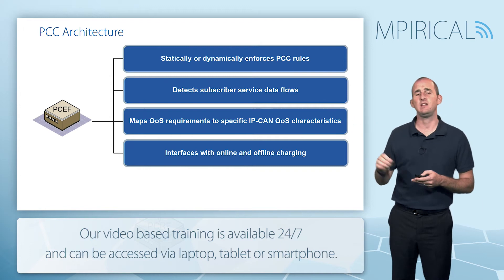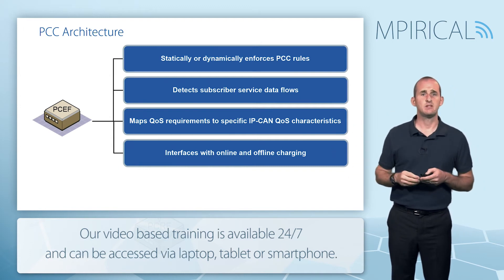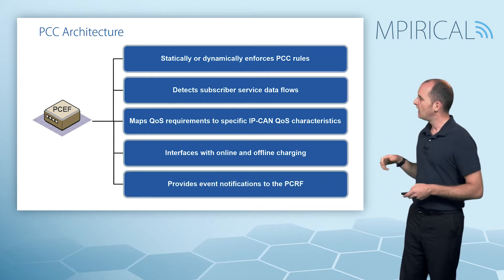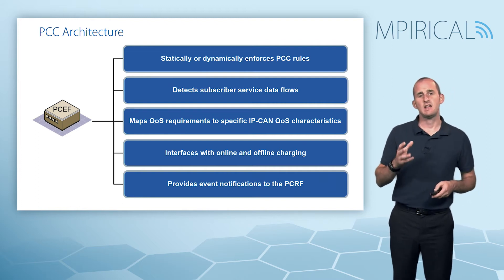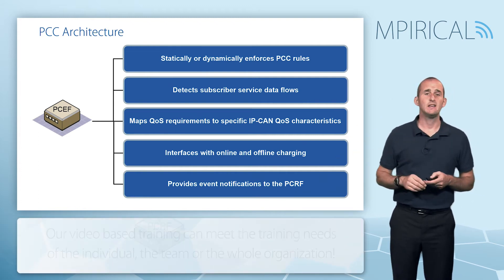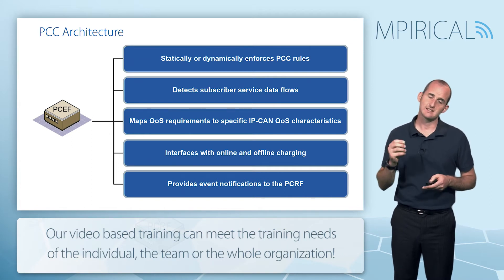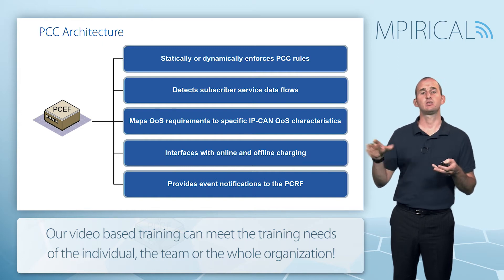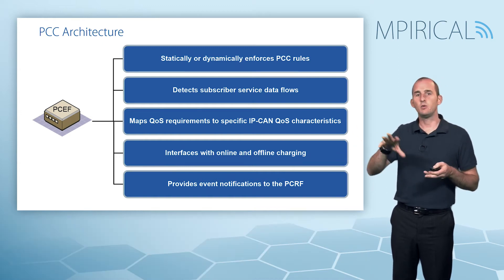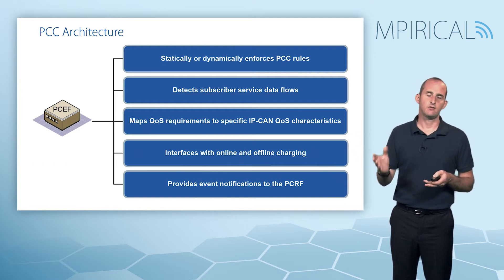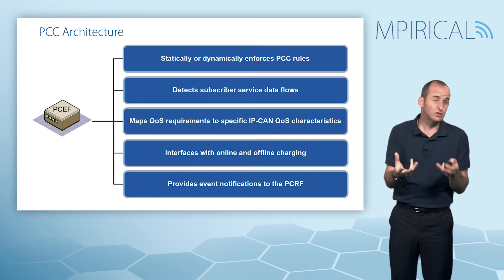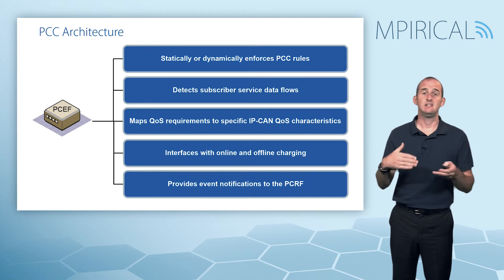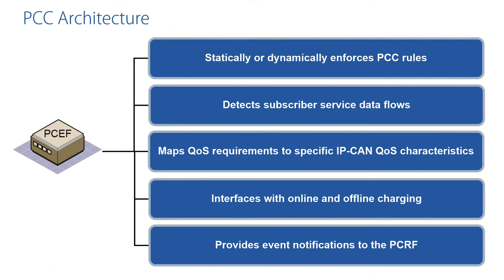Using a couple of Diameter-based interfaces, the PCEF can also interact with both online charging and offline charging. The PCEF will also generate event-based information and send it to the PCRF when required. An example would be if the subscriber has changed their access network — that's the kind of event the PCEF could potentially report to the PCRF, because a change in the access network might mean policy needs to be changed or a rule needs to be modified.